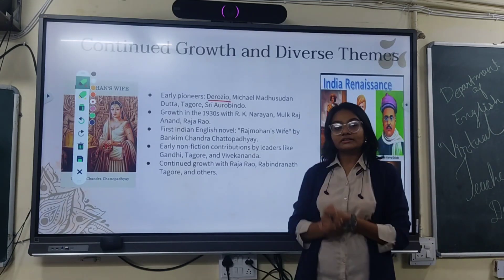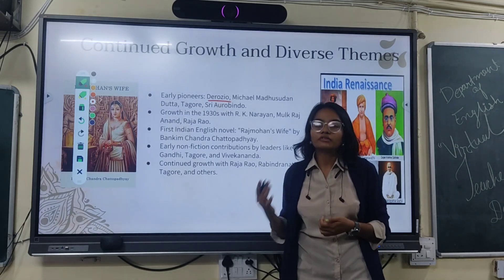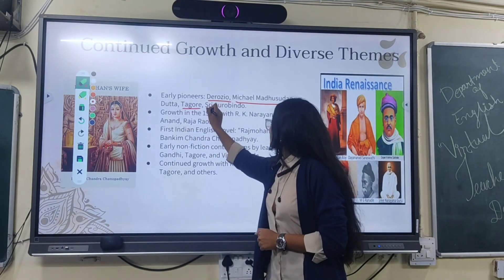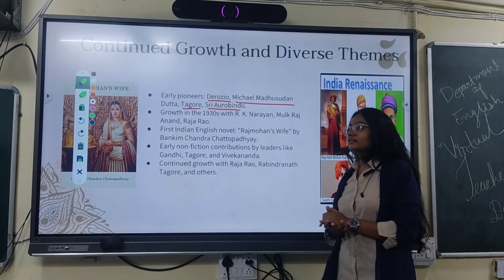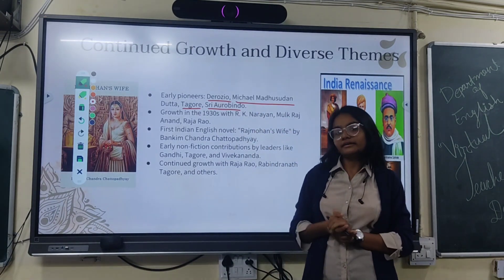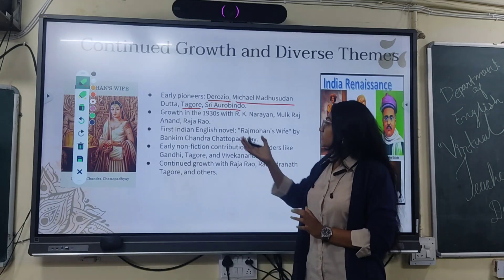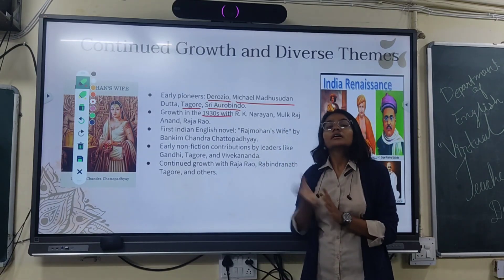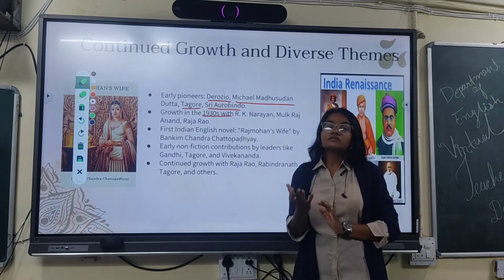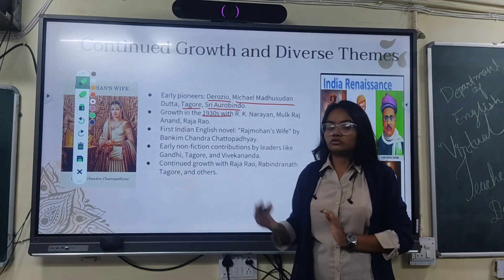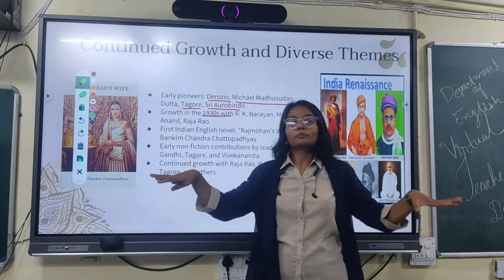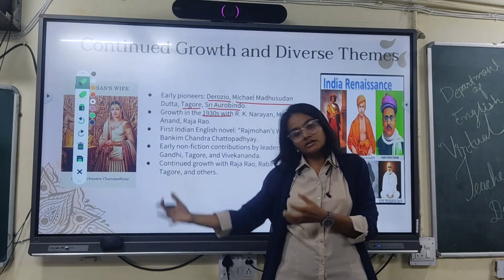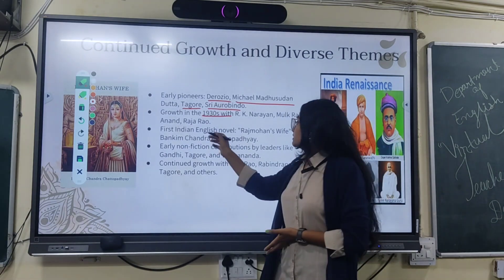The early pioneers of the Indian Renaissance include Michael Madhusudan Dutt and Sri Aurobindo — almost all from Bengal, where it started. In the 1930s, R.K. Narayan, Mulk Raj Anand, and Raja Rao also contributed to Indian Renaissance literature, depicting Indian society, culture, and values. These later writers gave a further push to the Indian Renaissance.